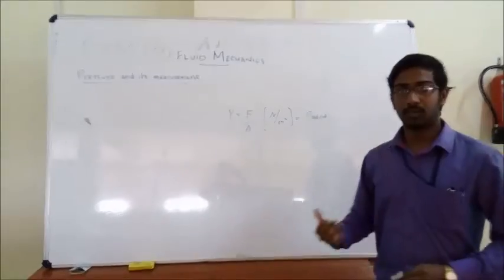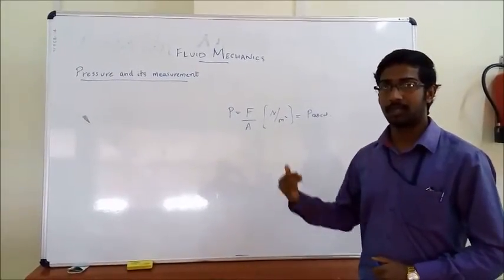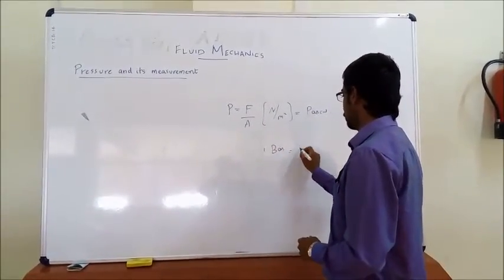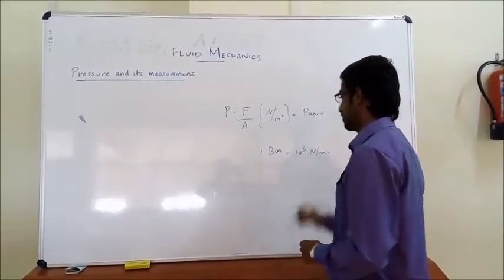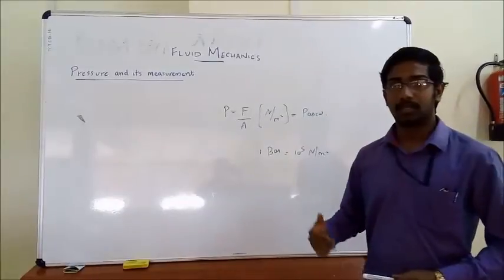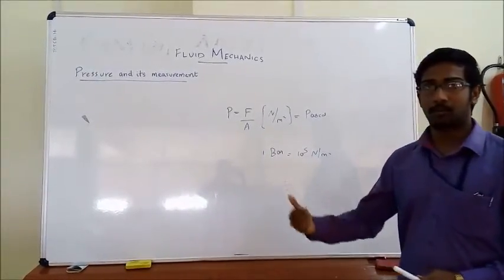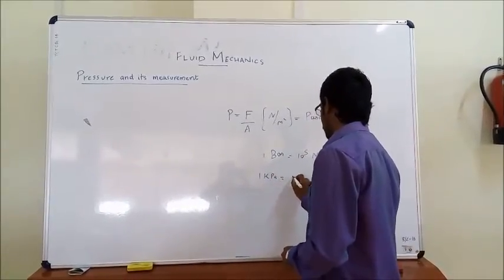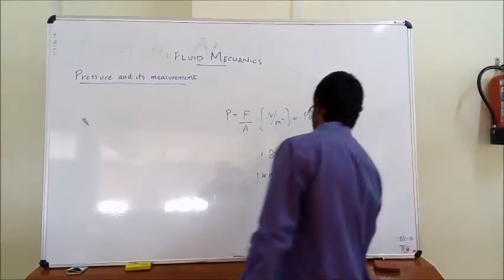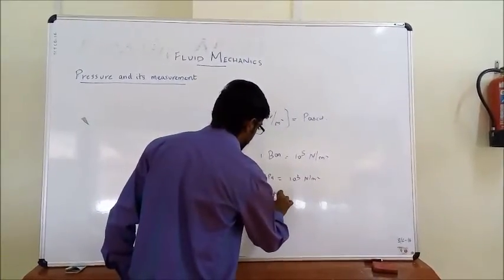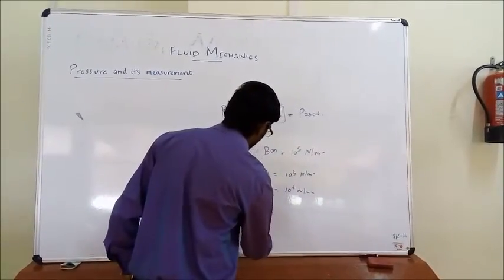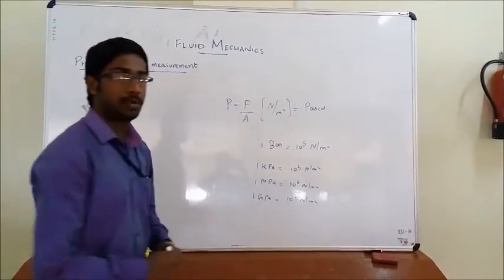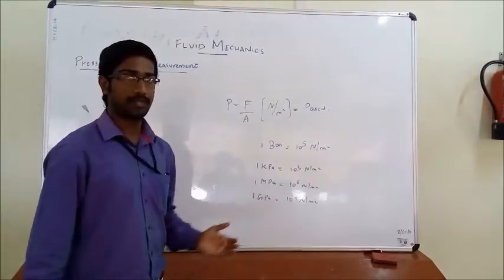The other important units that we come across during problems in Fluid Mechanics are: first is bar — one bar is equal to 10 raised to 5 Newton per meter square. We can also represent pressure in Pascal, Megapascal, Kilopascal, and Gigapascal. One Kilopascal equals 10 raised to 3 N/m², one Megapascal equals 10 raised to 6 N/m², and one Gigapascal equals 10 raised to 9 N/m².